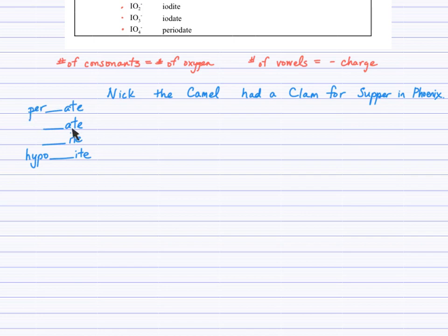Now there's four rows to this table. The first will be the per-ate. The second is the ate row. So Nick the Camel tells us the ate row. This is the row that we need to fill in first. So from Nick the Camel we get the ates.